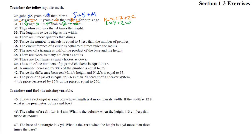Number 32: radius is five less than four times the height. Remember with 'less than,' the five has to go the other way, so we start with four times the height and then subtract five: R = 4H − 5. Number 33: length is twice as big as the width, so L equals two W.